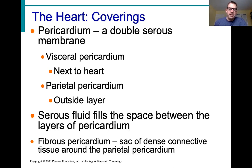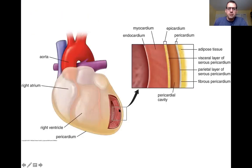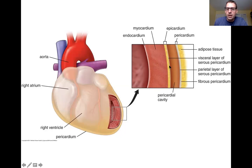Wrapping around all of that is a sack of dense connective tissue called the fibrous pericardium. Looking at this picture, we can see the wall of the heart, one of the chambers, and the two layers of the pericardium: the visceral pericardium attached to the outermost layer of the heart, and the parietal layer of the pericardium. The fibrous pericardium encloses everything, and the space between the two pericardial layers is filled with that serous fluid.